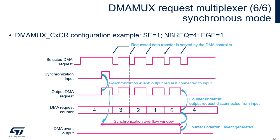Synchronization mode can be used to automatically synchronize data transfers with a timer, for example, or to condition transfers from any peripheral event that is mapped as a synchronization input. Additionally, a synchronization overflow can notify the software if a programmed number of DMA requests has not been completed between two synchronization events.